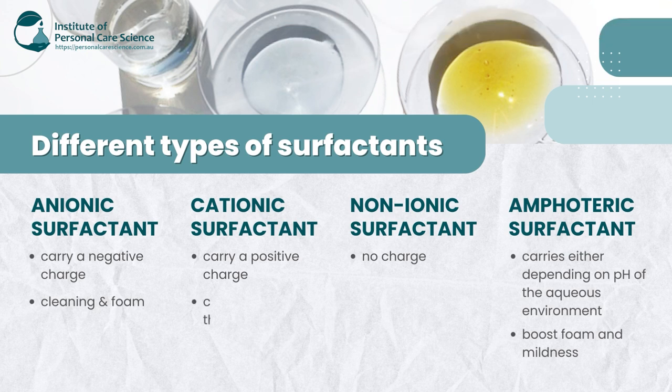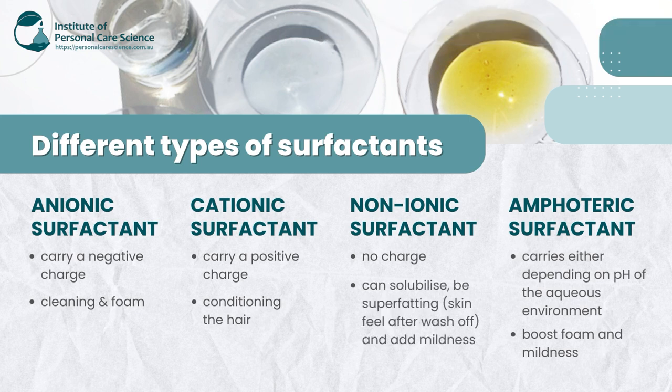Your cationic surfactants are used in your conditioning products. They are used to condition the hair and your non-ionic surfactants are also added into other cleansing products to improve mildness, but depending on what they are they can be used to solubilize any oils into the water phase, and also if they're a superfading agent they are used to improve the skin feel after wash off.